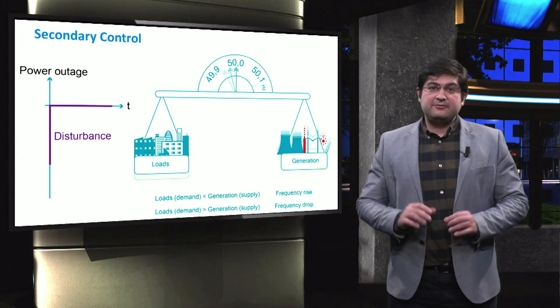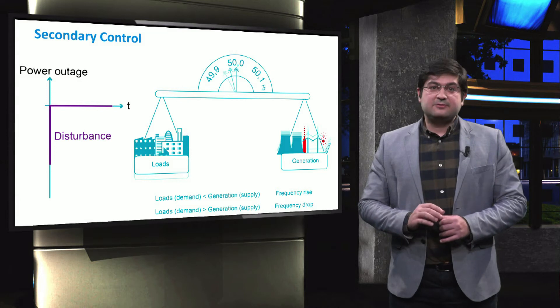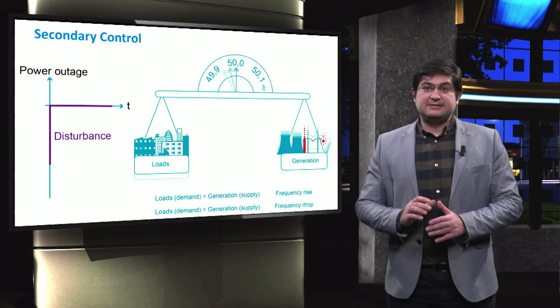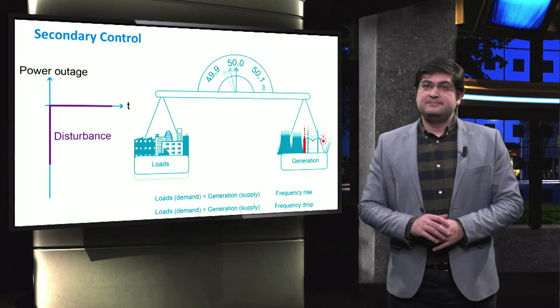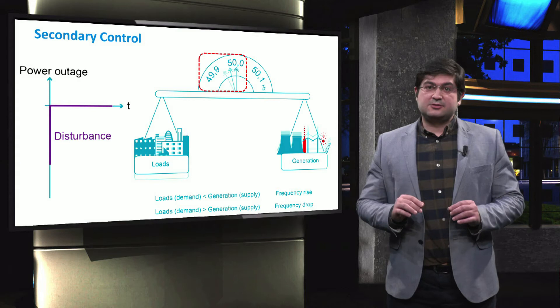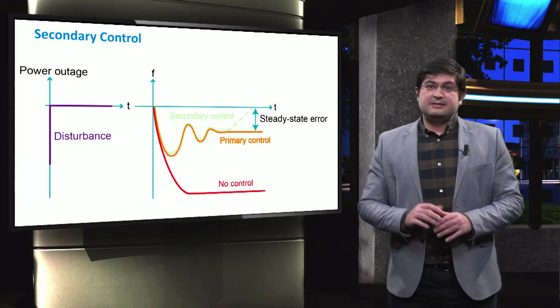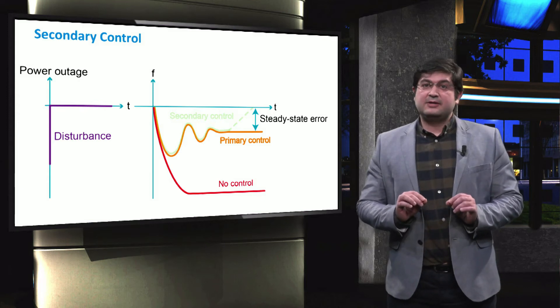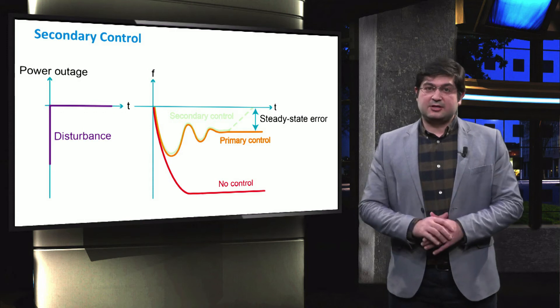In the previous videos, we've emphasized that the frequency shall be always maintained at the rated value. If there is a mismatch between the generation and the demand, for instance due to the outage of one generating unit, then the frequency starts to decrease. If no control is applied, then the frequency largely deviates and reaches a very low steady state value due to which the electrical grid is shut down.